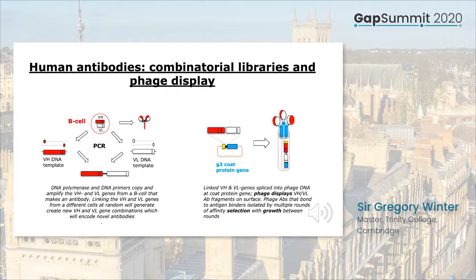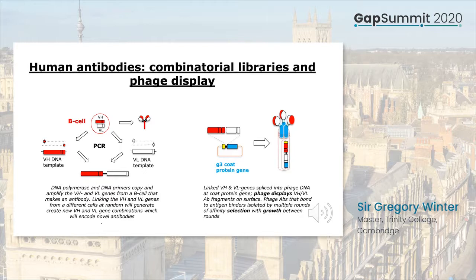In that way, the antibody fragments are displayed on the surface of the phage. So we have phage with antibodies on the outside and the corresponding antibody gene on the inside, making it possible to isolate the antibody genes of interest by seeing whether the phage binds to an antigen coated to a solid support.